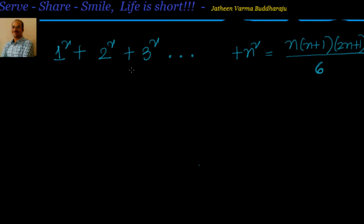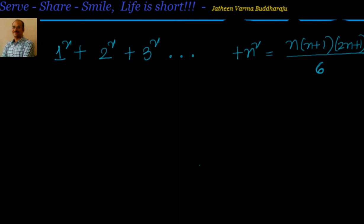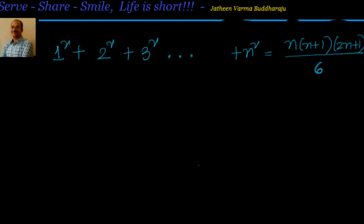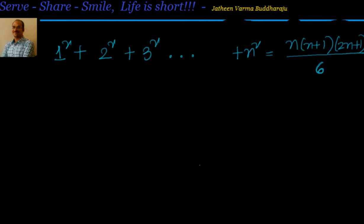Hello, welcome back. We have to find out what is the sum of 1 square plus 2 square plus 3 square up to n square — that's the sum of squares of natural numbers. We have to prove that it equals n(n+1)(2n+1)/6.